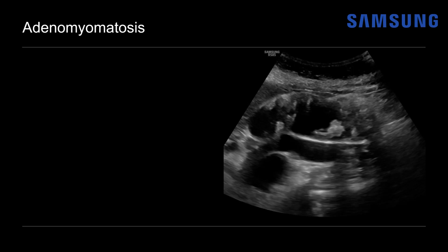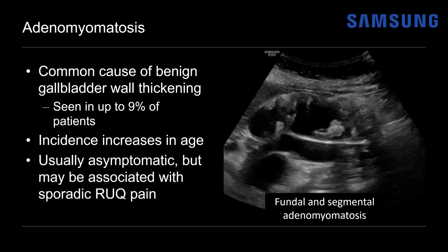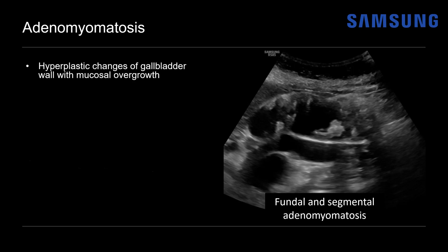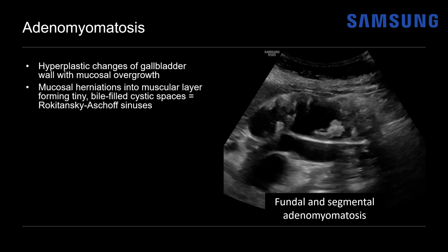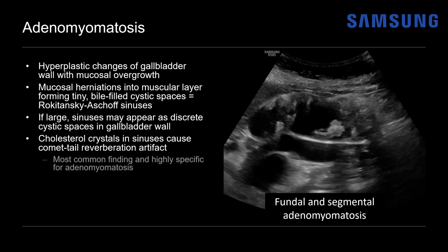So this is a patient with adenomyomatosis — this patient actually had both the fundal type and the segmental type. Adenomyomatosis is a common cause of benign gallbladder wall thickening, seen in up to 9% of patients, and the incidence increases with age. It's usually asymptomatic but can sometimes be associated with sporadic right upper quadrant pain. Pathologically there are hyperplastic changes of the gallbladder wall with mucosal overgrowth, leading to mucosal herniations into the muscular layer forming tiny bile-filled cystic spaces known as Rokitansky-Aschoff sinuses. Cholesterol crystals that deposit in the sinuses cause the comet tail reverberation artifact, which is the most common and highly specific finding on ultrasound for adenomyomatosis.